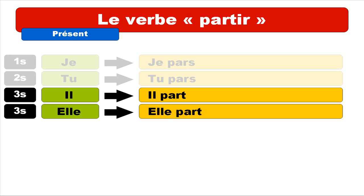Well, as usual — quite often — we've got the same pronounced form for Je, Tu, Il, and Elle: Je part, Tu part, Il part, Elle part. But keep in mind that you write the final S for Je and Tu, and the final T for Il and Elle.